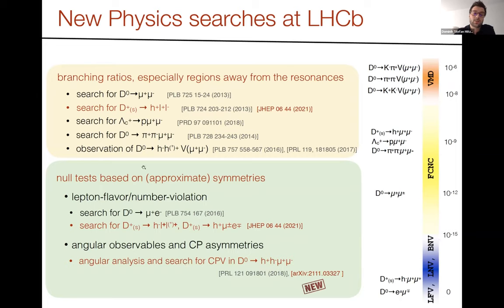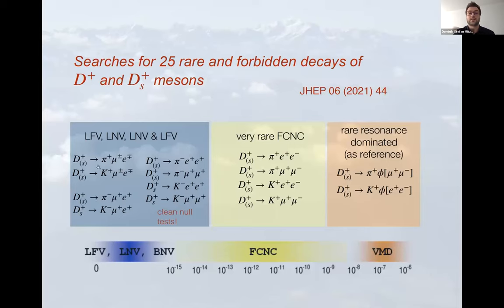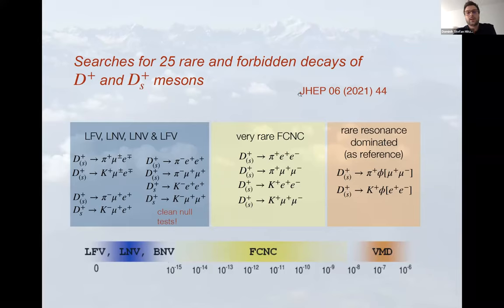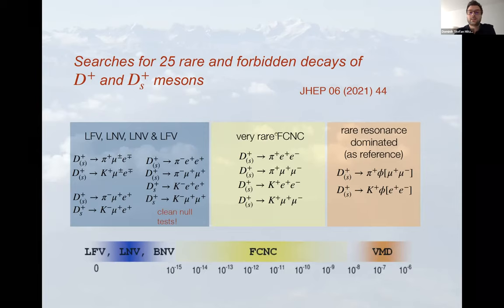Two recent results are presented. The first is the search for 25 rare and forbidden decays in D-plus and Ds mesons. What all 25 decays have in common is one hadron in the final state (a kaon or a pion) and two leptons (muons or electrons), forming all sorts of combinations. A large amount of these combinations is actually forbidden in the standard model, making very clean null tests. Another set is sensitive to the FCNC process.